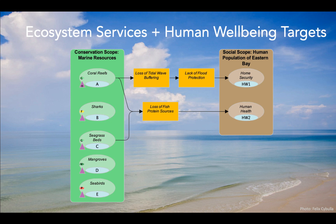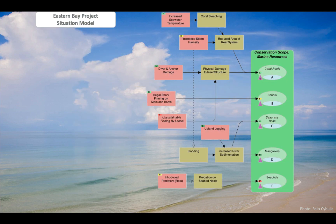Often teams also want to show how their conservation efforts will contribute to human well-being. They can use a situation model to illustrate how healthy biodiversity targets may provide ecosystem services like flood protection that would contribute to human well-being like home security in this marine project area. This diagram shows how the direct threats in the pink boxes are contributing to biophysical impacts in the brown boxes on each of the conservation targets.